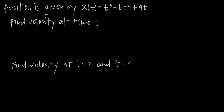In this video, we're talking all about the position function of a particle. In this particular problem, we've been given the position function x of t is equal to t cubed minus 6t squared plus 9t. It's called the position function because it models the position of the particle at time t. So for example, if we plugged in t equals 1 and evaluated the position function at t equals 1, we would find the position of the particle after one second.